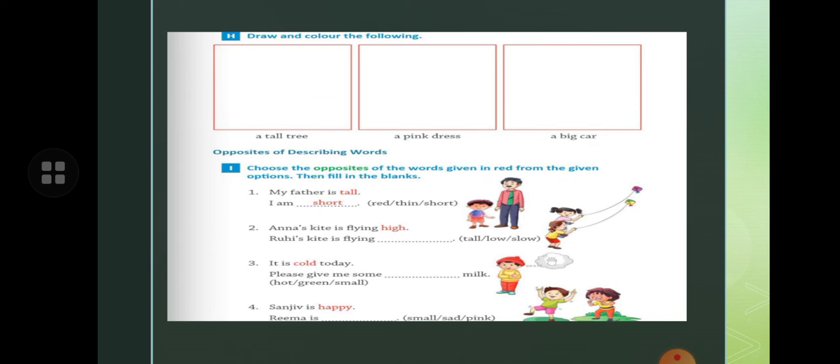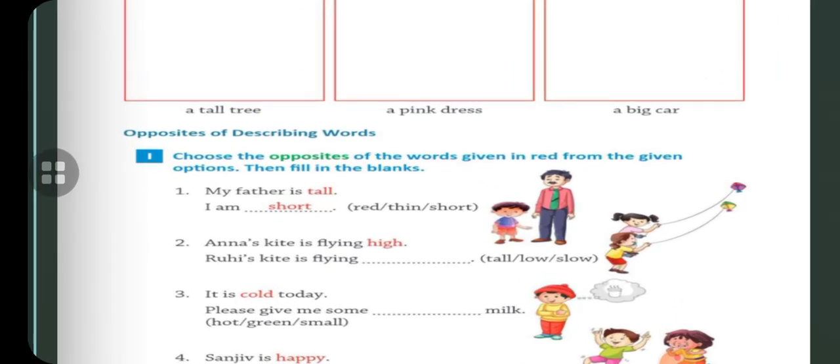And exercise I. Choose the opposites of the words given in red from the given option. Then fill in the blanks. Here, my father is tall, I am short. You have to choose the opposite. Opposite of tall is short. Here Anna's kite is flying high. Ruhi's kite is flying - opposite of high is low.